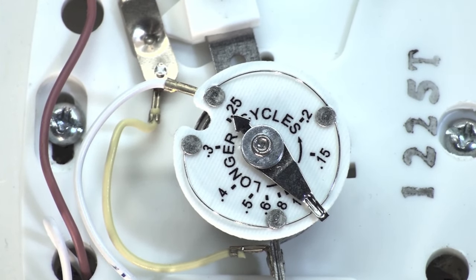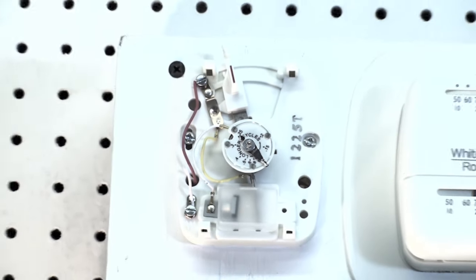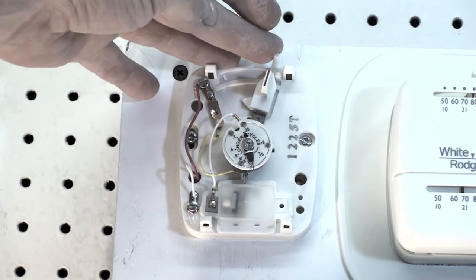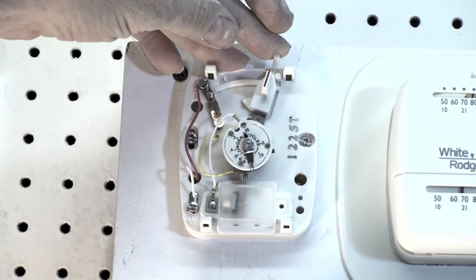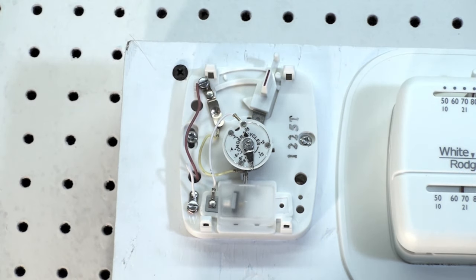Okay, why do we have adjustable anticipators? The reason is very simple. The power draw when the thermostat is closed - now this one here, when this closes, power passes through that little heater and starts warming it up. But how much power passes through it?